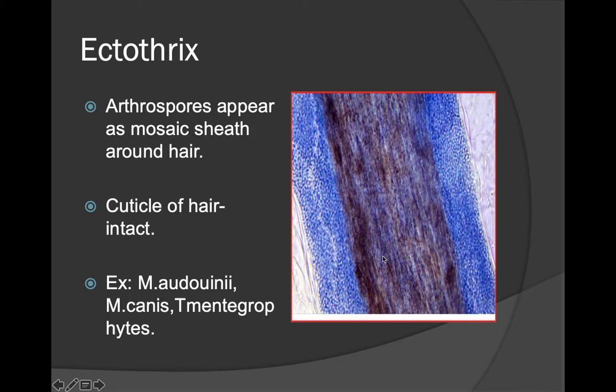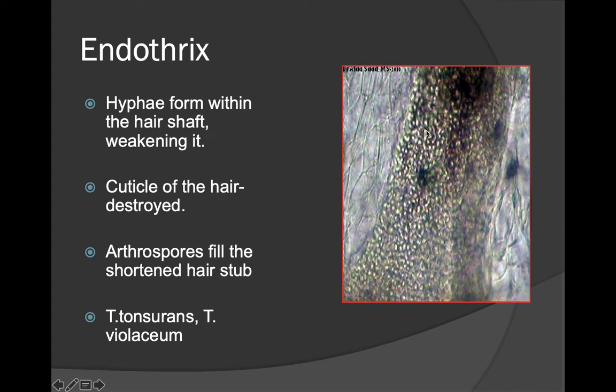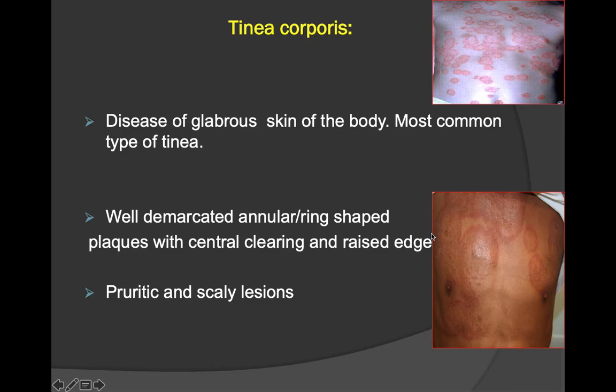Examples of ectothrix infection include M. audouinii, M. canis, and T. mentagrophytes — the cuticle remains intact. Under endothrix infection, hyphae form within the hair shaft, destroying the cuticle, and arthrospores fill the shortened hair stump. T. tonsurans and T. violaceum are the causative agents of endothrix infection.